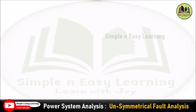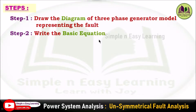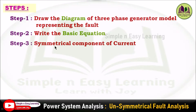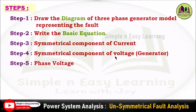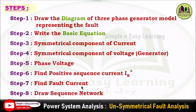We are going to see the steps involved in the analysis of a single line to ground fault in a power system. Step 1: draw the diagram of the three phase generator model representing the fault. Step 2: write the basic equations. Step 3: consider symmetrical components of current. Step 4: consider symmetrical components of voltage from the sequence network. Step 5: consider the phase voltage. Step 6: find the positive sequence current ia+. Step 7: find the fault current If. Step 8: draw the sequence network.